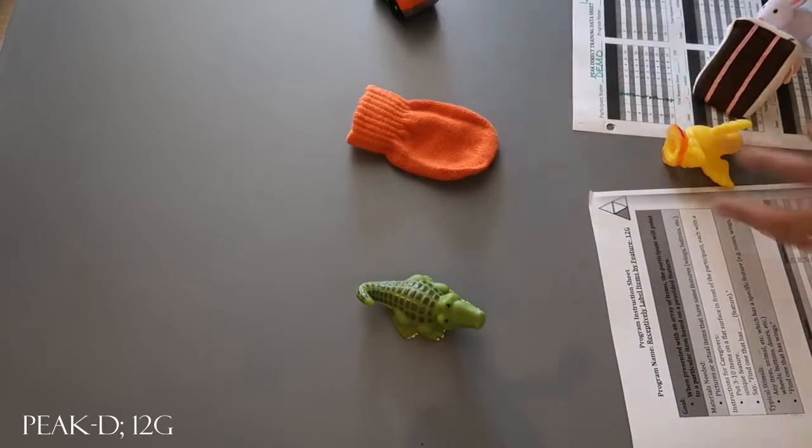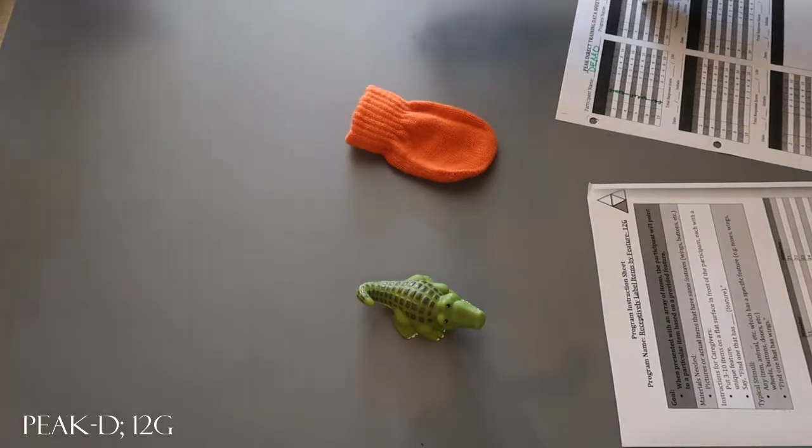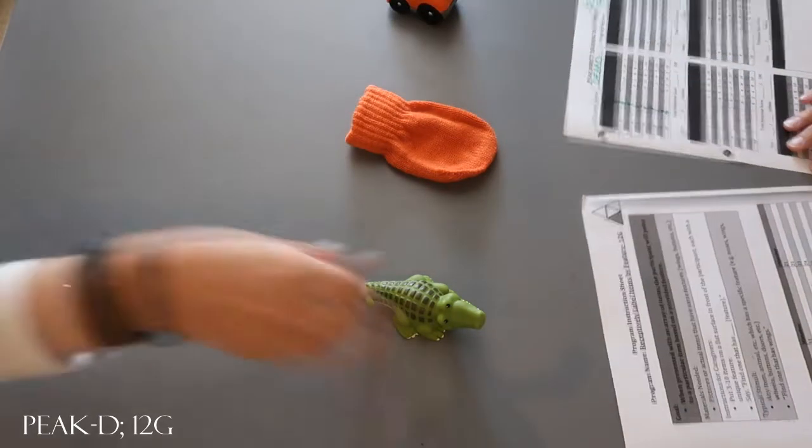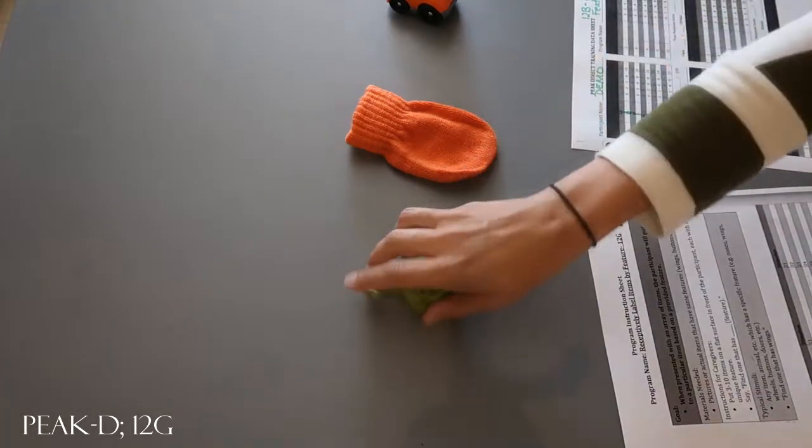Let's do another one. Which one has a tail? No, a car has wheels. Which one has a tail? That's right. It has a tail.